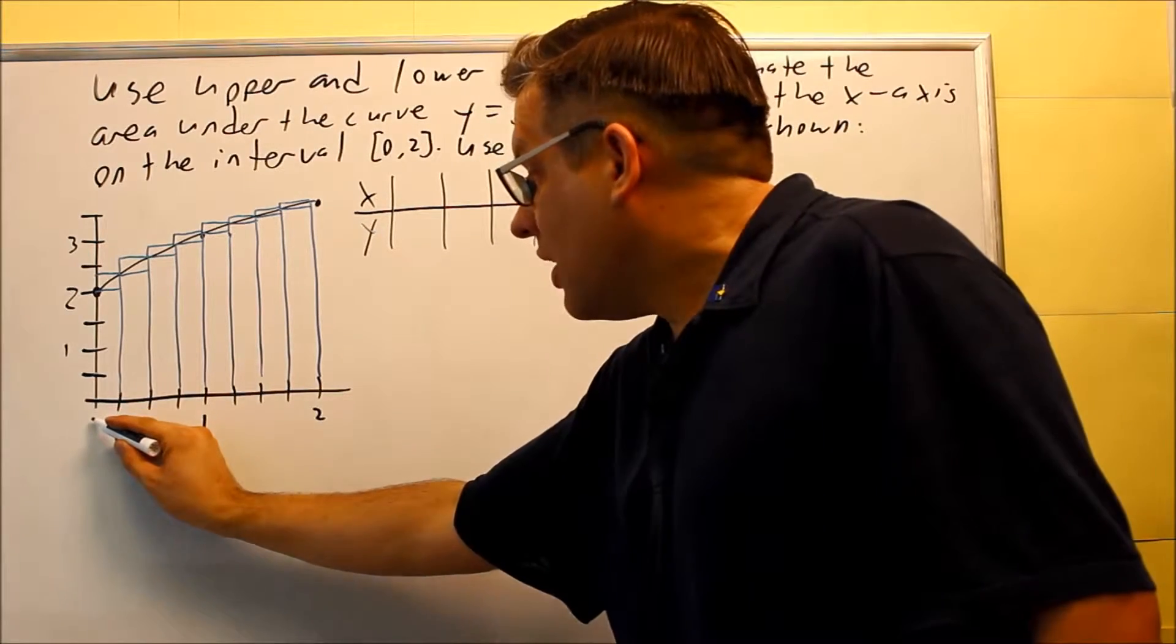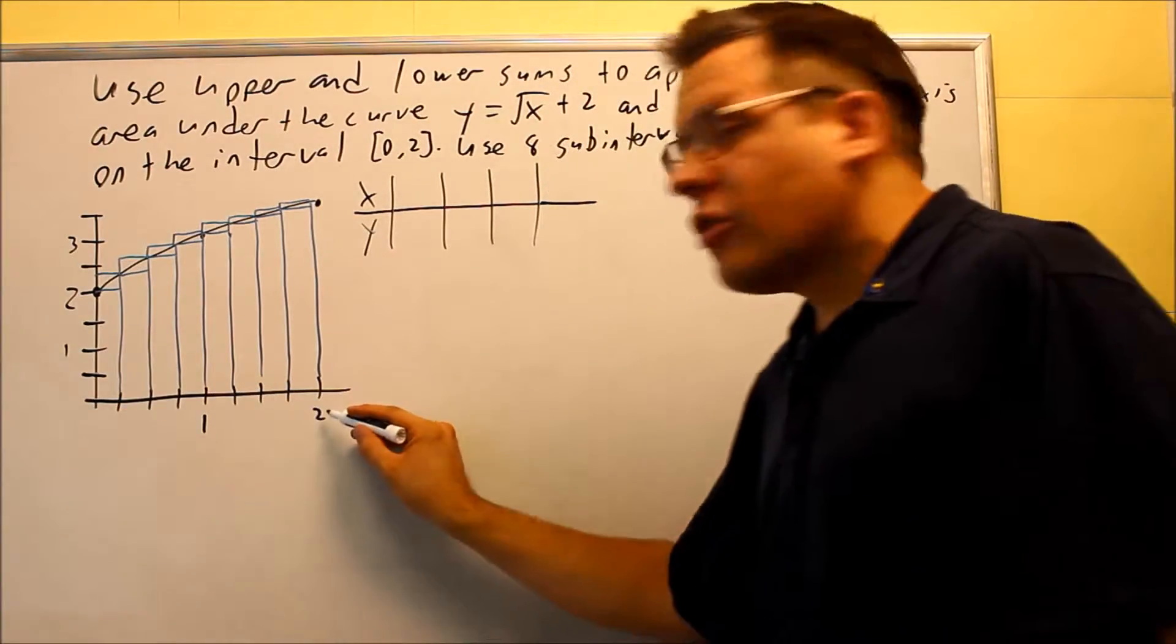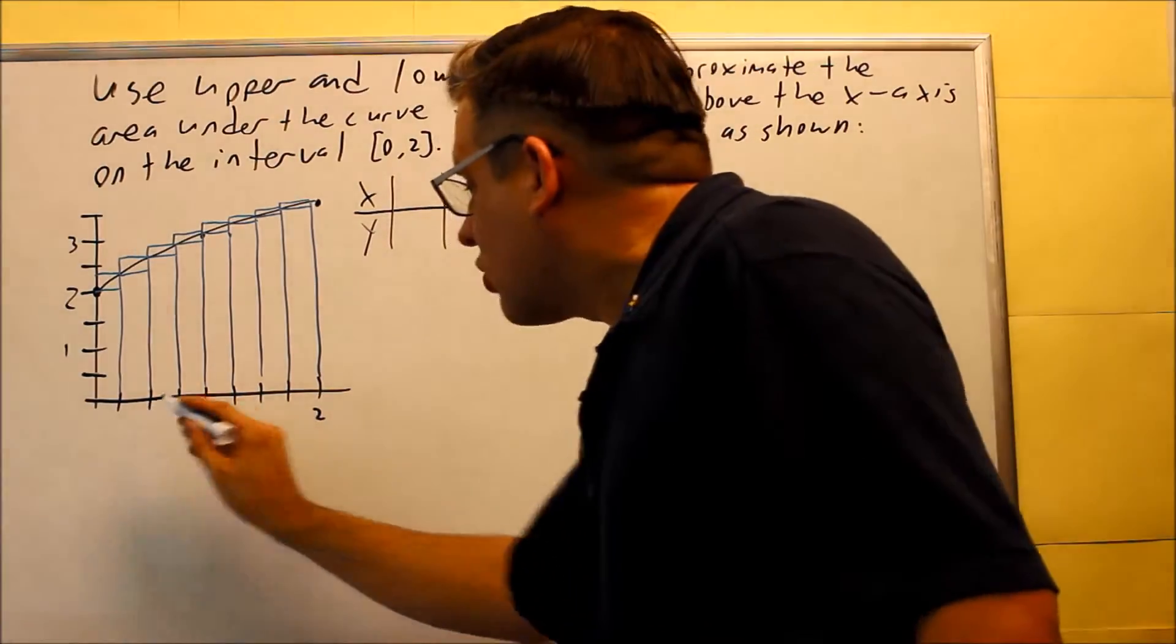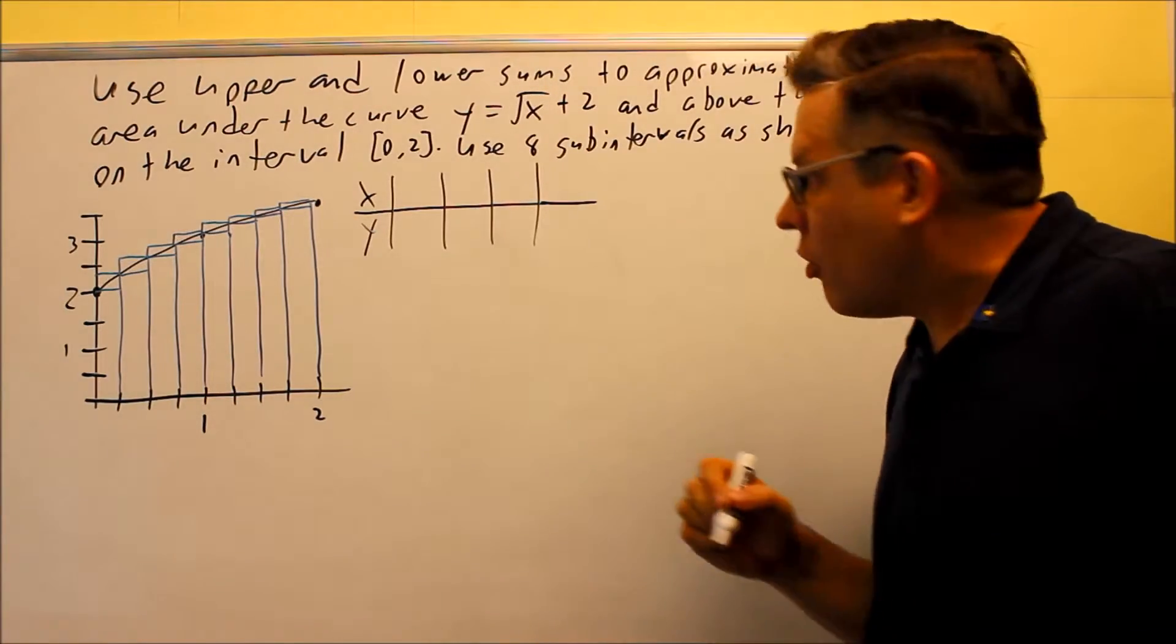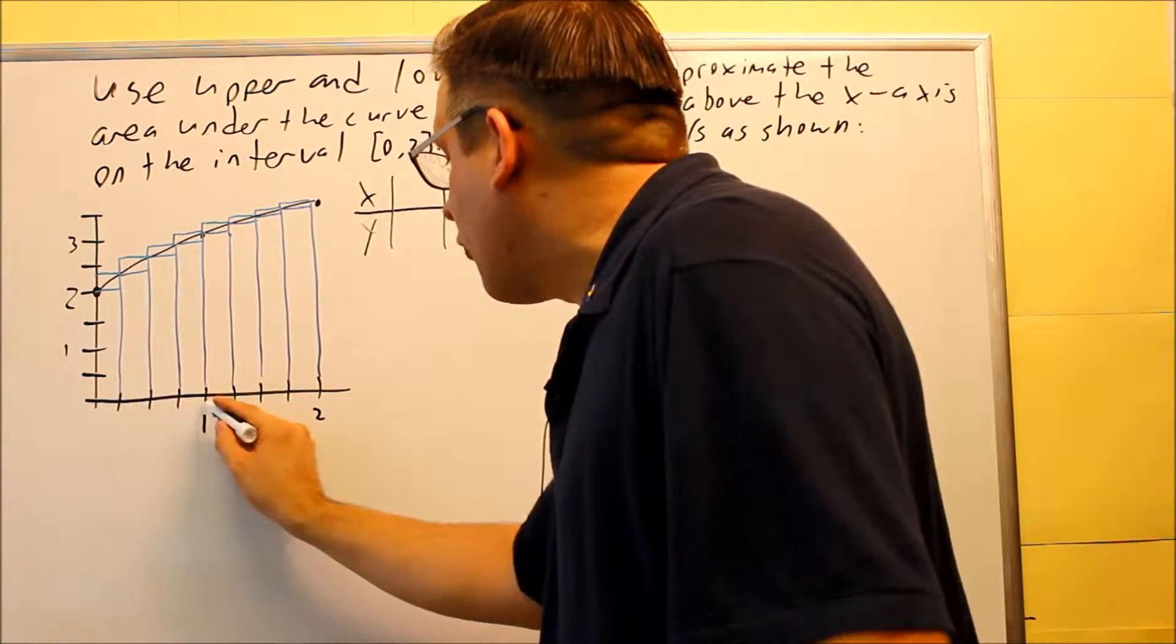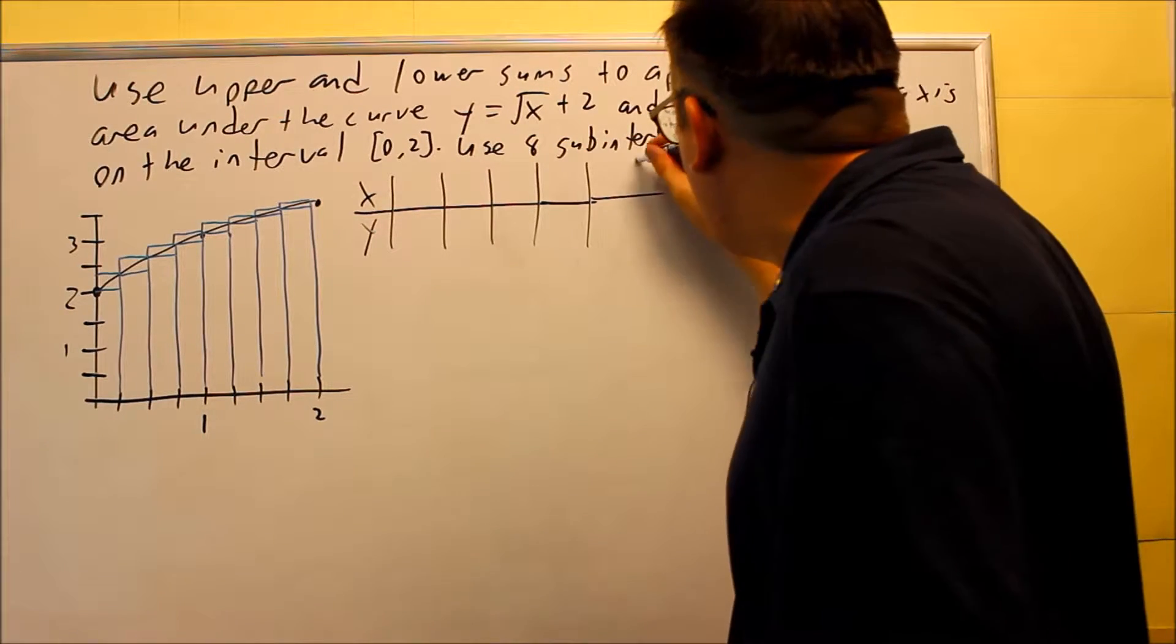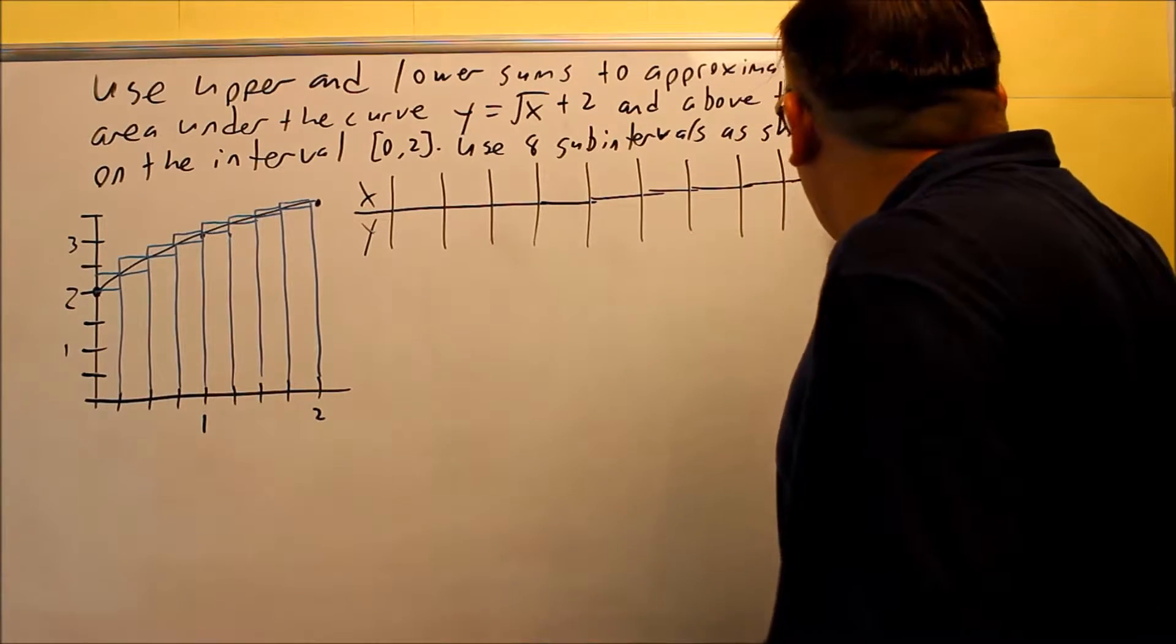We're going to be doing 0, and then each of the x values that we have going across here. Well, we have between 0 and 2, and if I take 2 and divide it by 8, that means the width of each of these rectangles is going to be 0.25. Which means I have a total of 1, 2, 3, 4, 5, 6, 7, 8—I have 9 different x values here, so now I know how big to make my table.